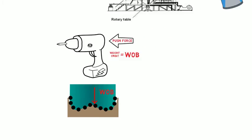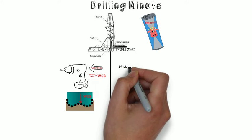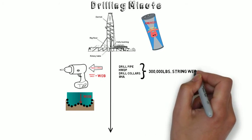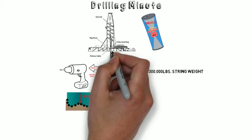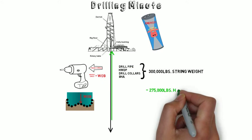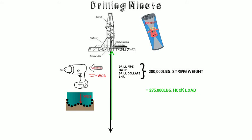If you added up the weight of all the components of the drill string, you would have what we call the string weight, which is usually hundreds of thousands of pounds. But not all of this is used to drill. Most of it is suspended from the derrick, which is known as the hook load. In fact, the structure of the derrick is actually designed to support this heavy load. The total string weight minus the hook load is the weight on bit.